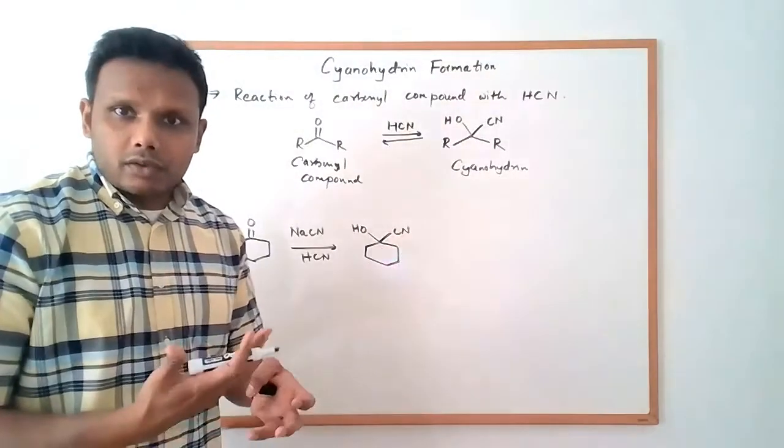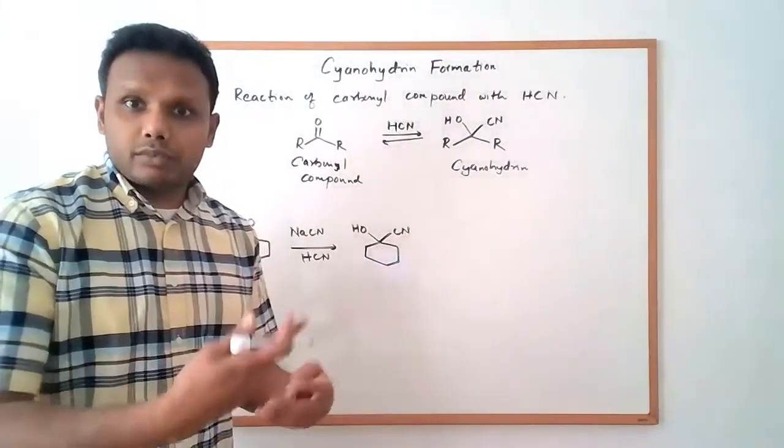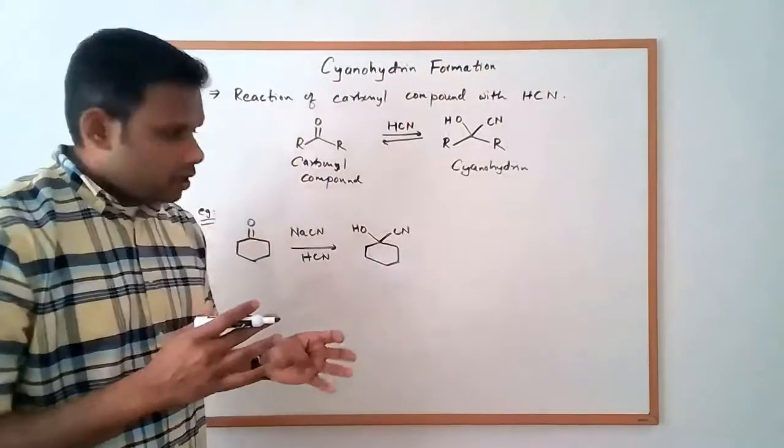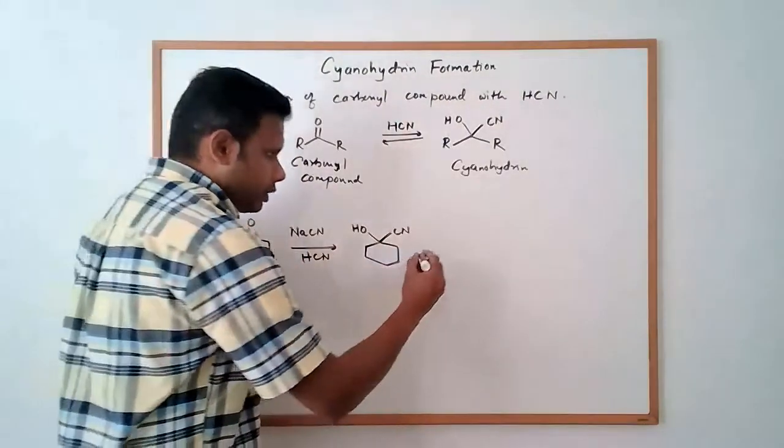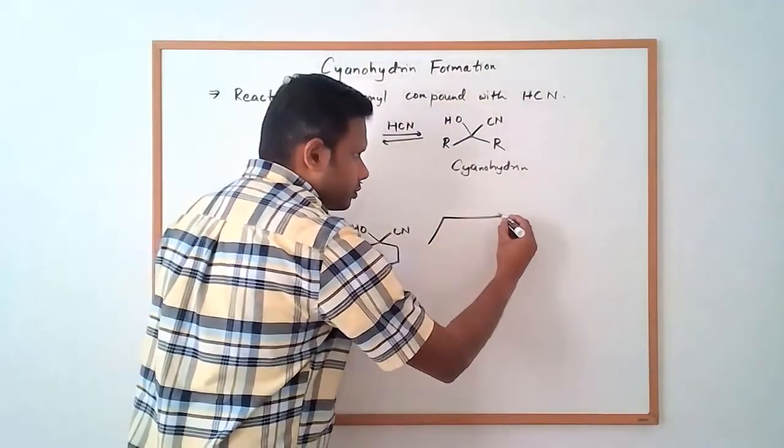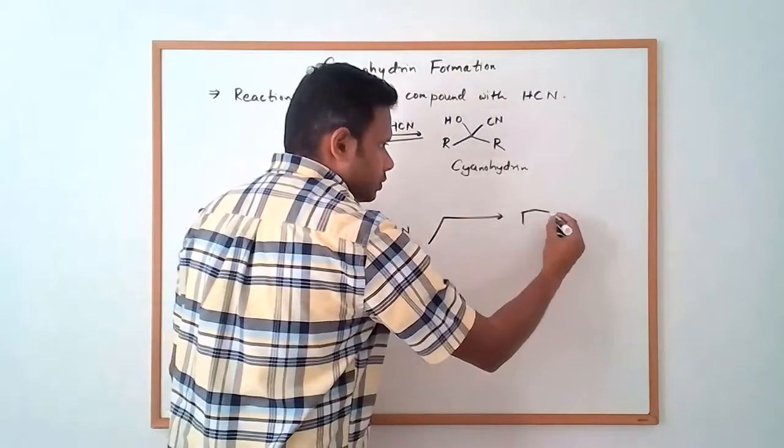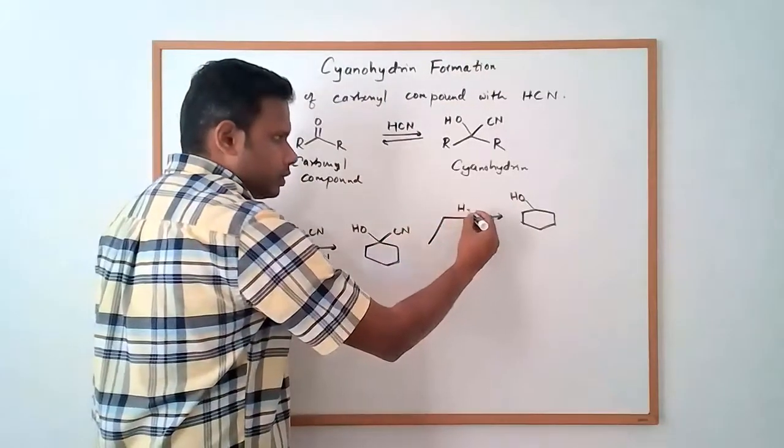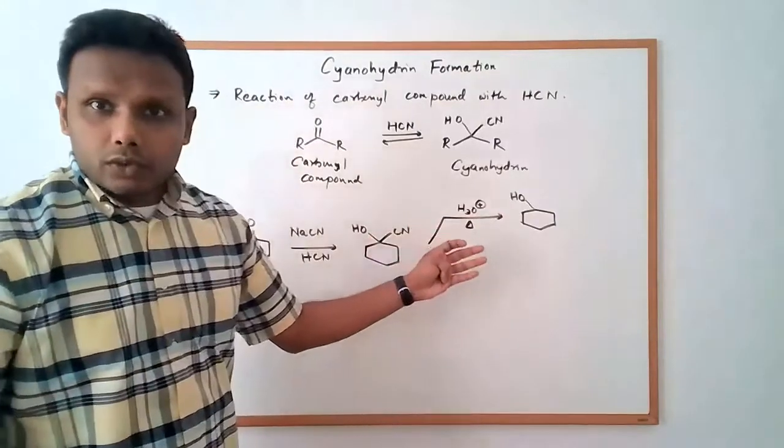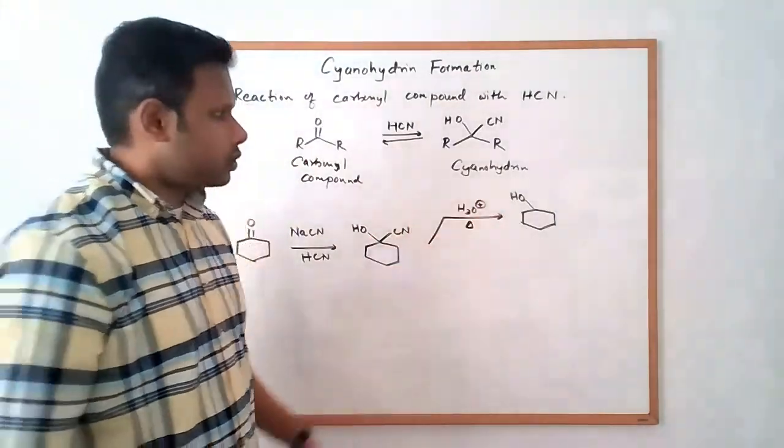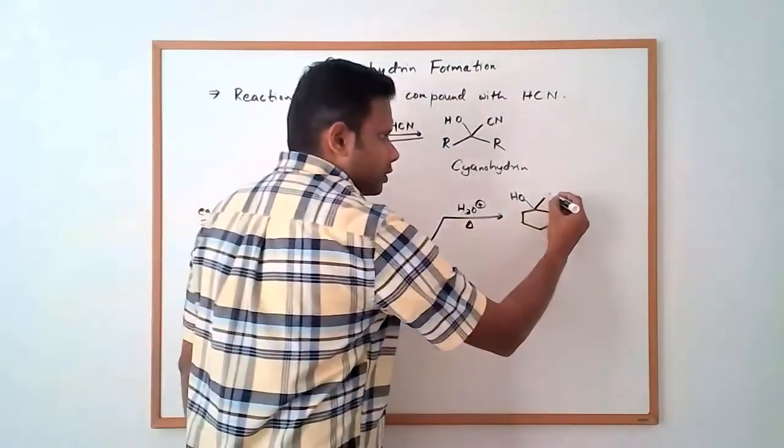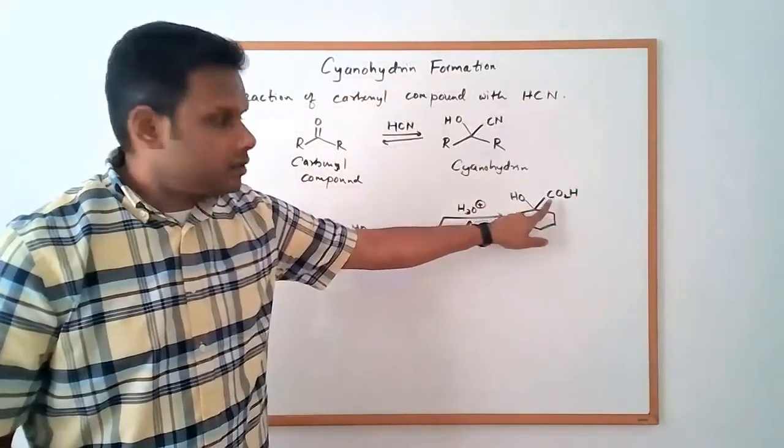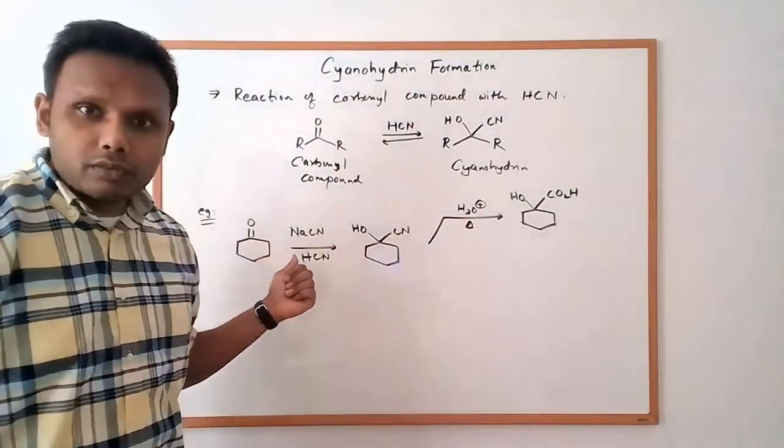Now the nitrile group is a versatile group that it has some advantages. It can be converted into other functional groups. So in principle, and we haven't talked about these reactions yet, like the mechanisms or anything, but in principle, this nitrile group can be converted into a carboxylic acid. So if you do a hydrolysis, you can do an acidic hydrolysis. And this reaction can also be catalyzed by a base, but acidic hydrolysis, then the nitrile group is hydrolyzed to give you a carboxylic acid. So that way now you can install a carboxylic acid functional and a hydroxyl group on the same carbon starting from the carbonyl compound.